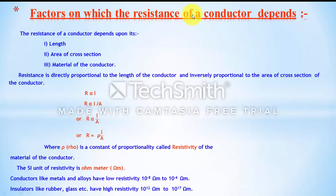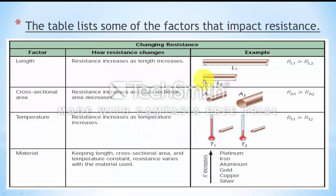Factors on which resistance depends: Resistance depends on length, cross-sectional area, and material. Increasing the length increases resistance — resistance is directly proportional to length. This is analogous to water flow: over a longer distance, water slows down. Similarly, charge traveling a longer distance through a conductor faces more resistance.